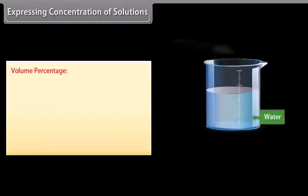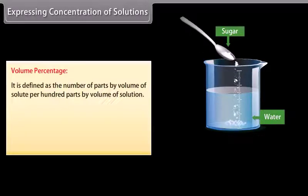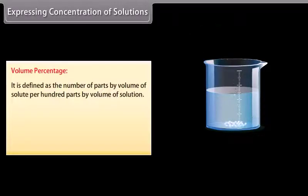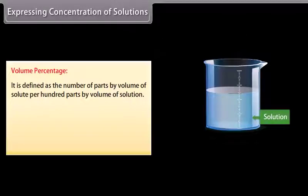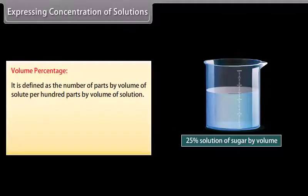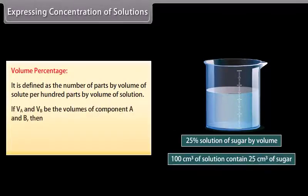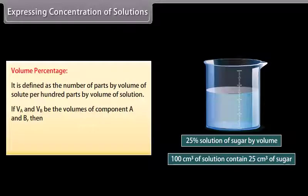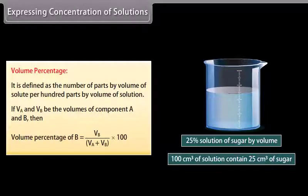Volume percentage is defined as the number of parts by volume of solute per hundred parts by volume of solution. If VA and VB are the volumes of components A and B, then volume percentage of B = VB / (VA + VB) × 100.